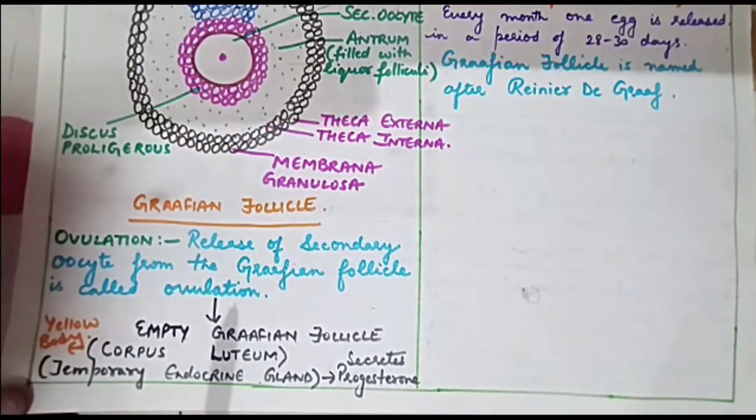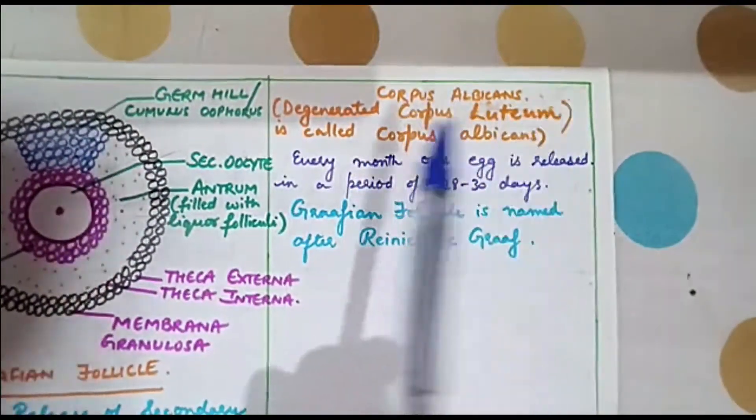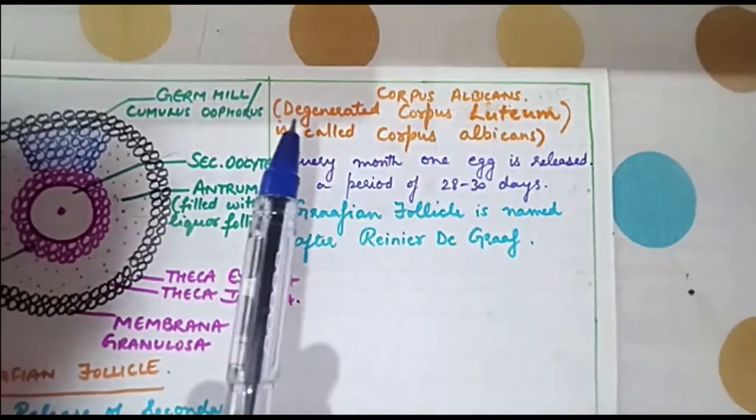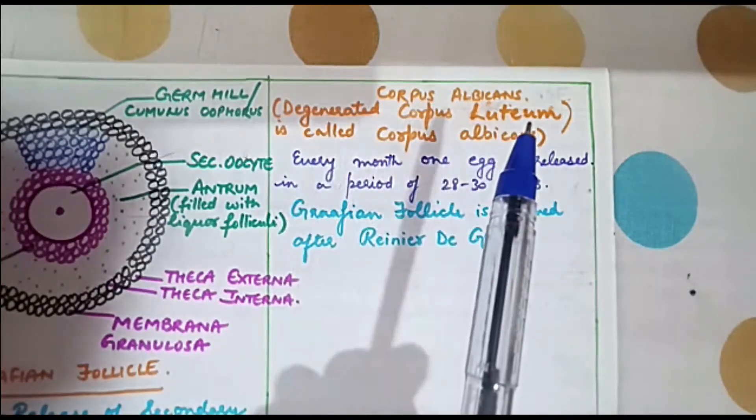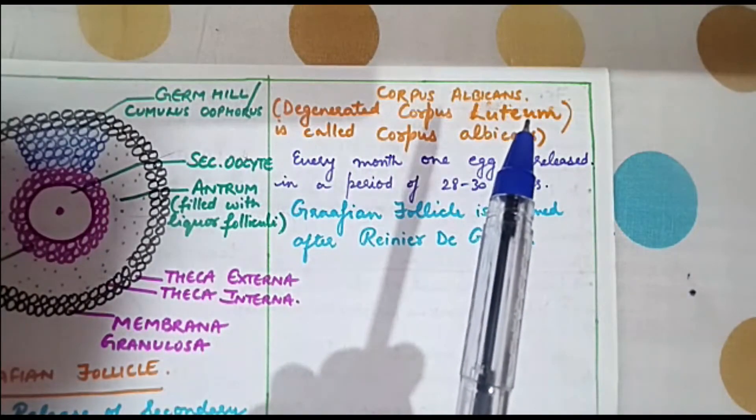Corpus luteum further is known by another name if it is not required. The name is corpus albicans. Corpus albicans is degenerated corpus luteum.